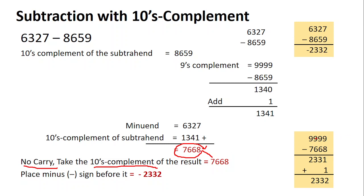To find the tens complement of the result 7668: count four digits, write four nines, write the result, and subtract. Nine minus eight is one, nine minus six is three, nine minus six is three, nine minus seven is two. This is the nines complement. Add one to get the tens complement.